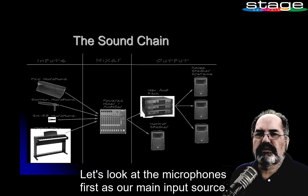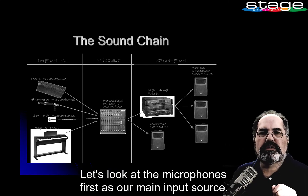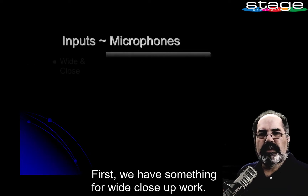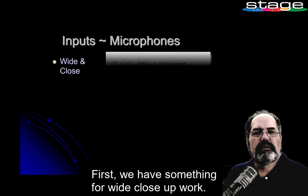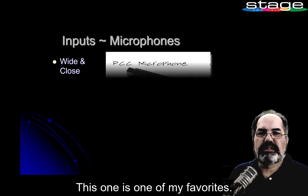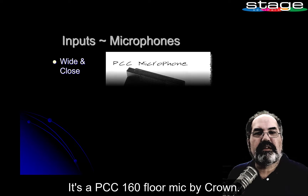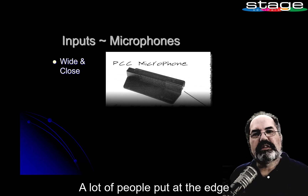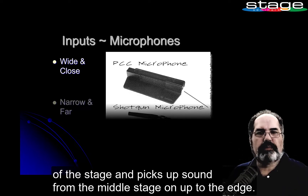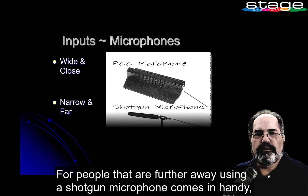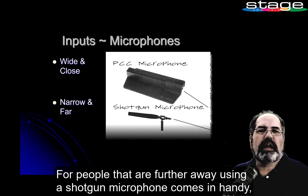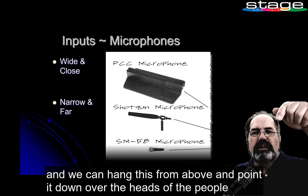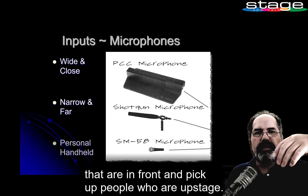Let's look at the microphones first as our main input source. First, we have something for wide close-up work. One of my favorites is the PCC 160 floor mic by Crown. A lot of people put it at the edge of the stage and it picks up sound from mid-stage on up to the edge. For people that are further away, using a shotgun microphone comes in handy — we can hang this from above and point it down to pick up people who are upstage.